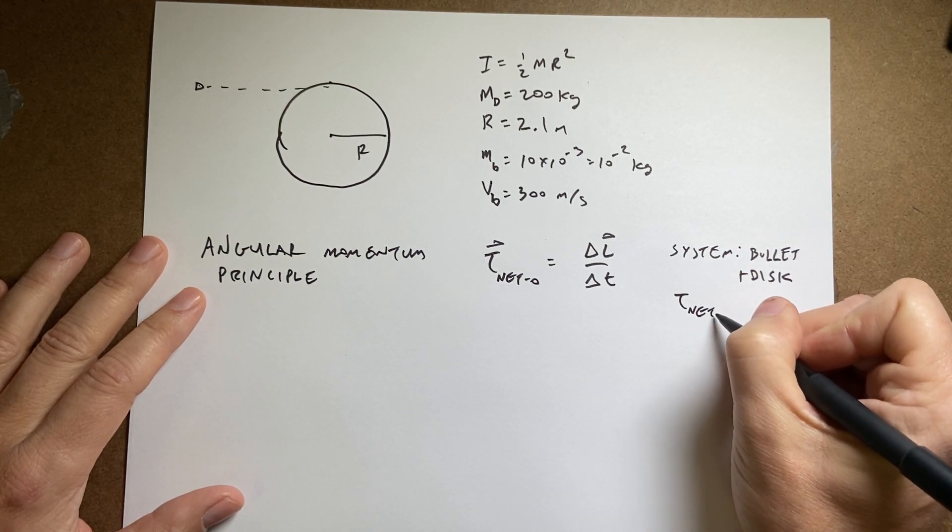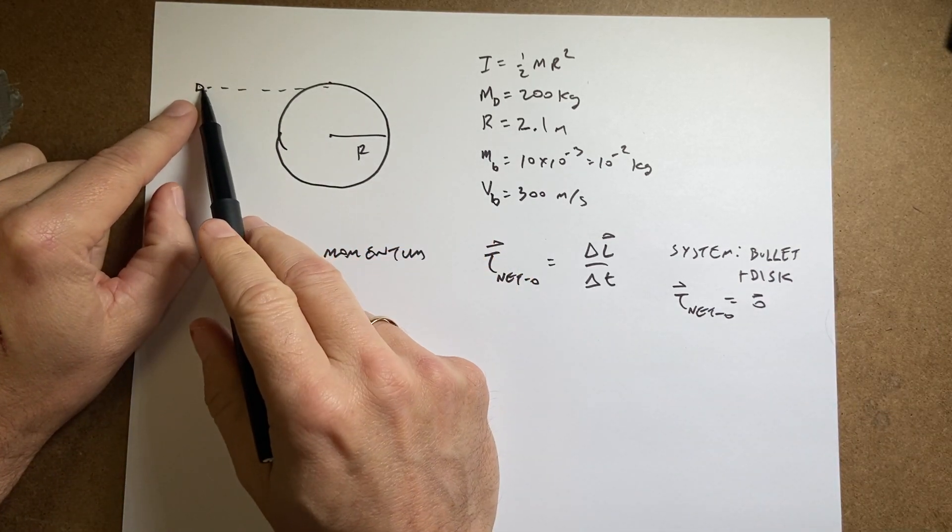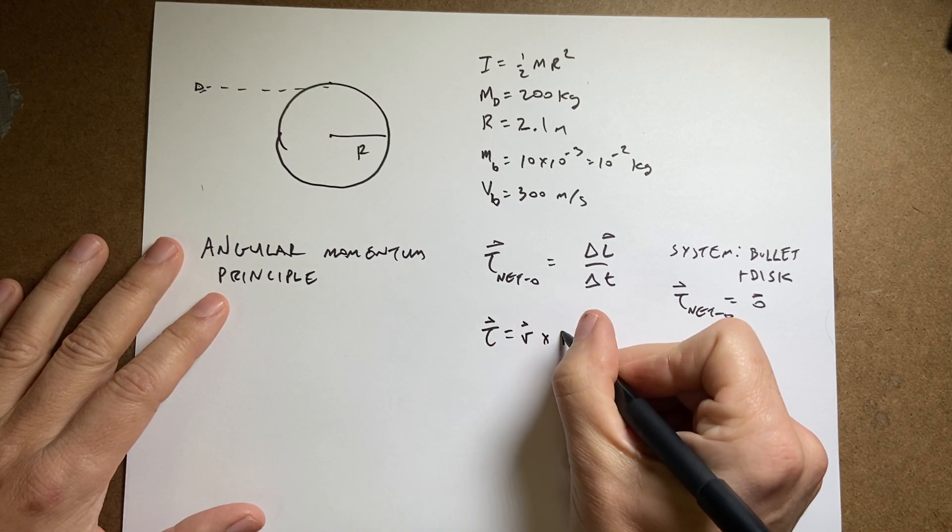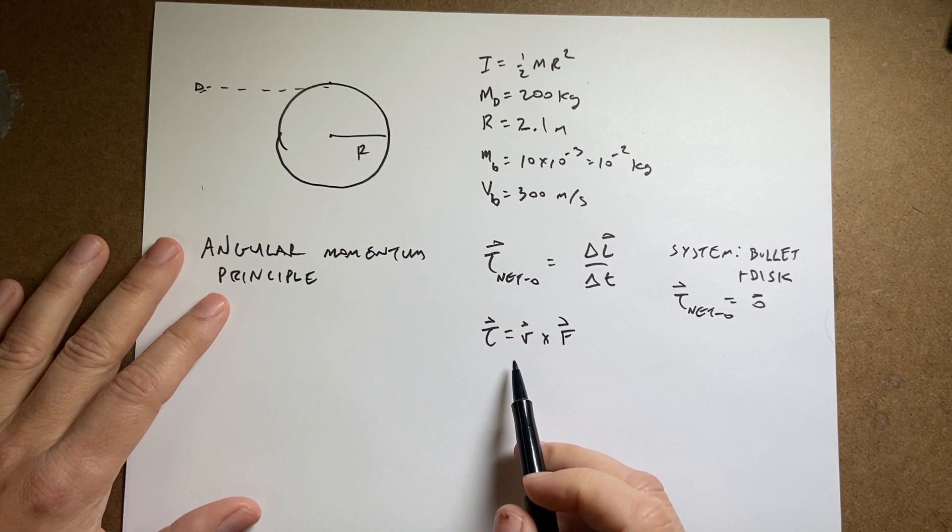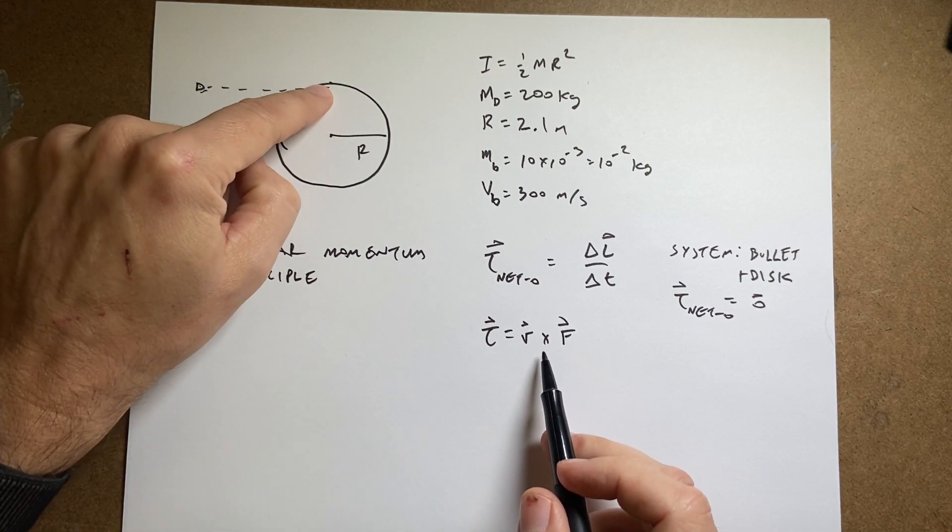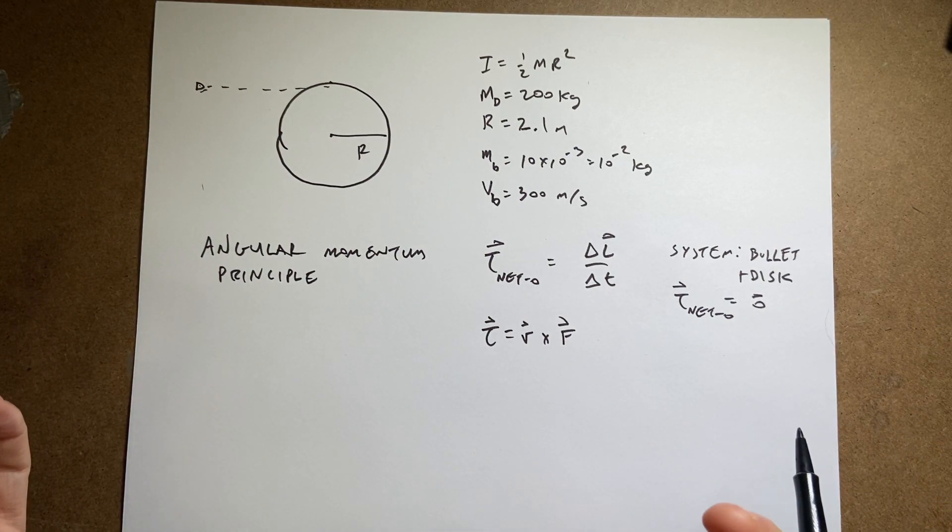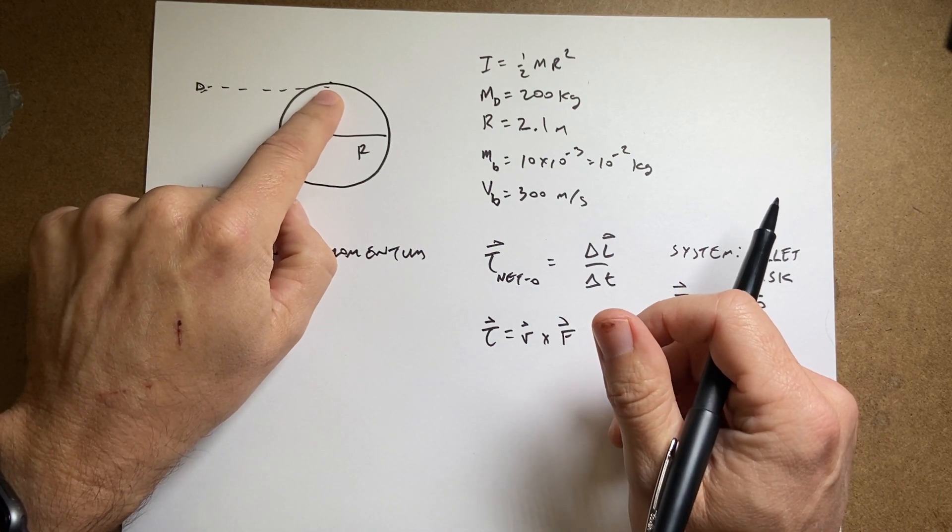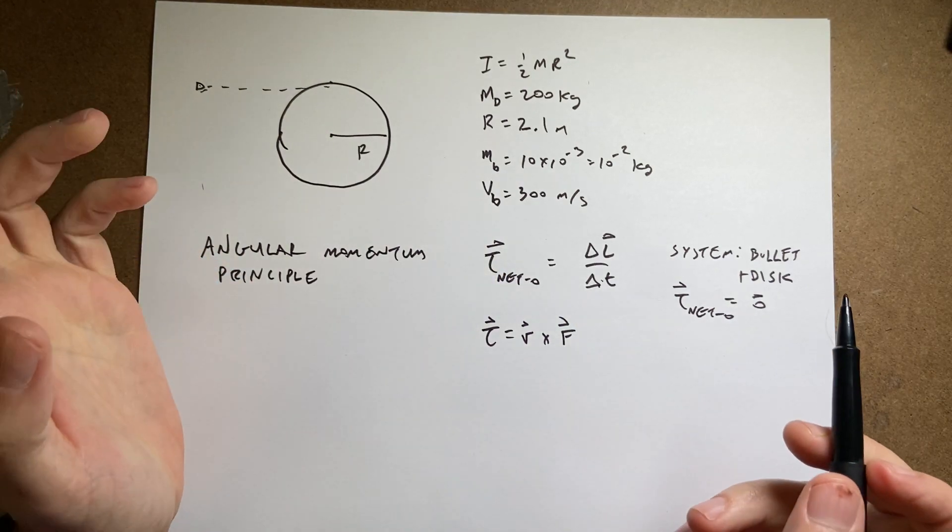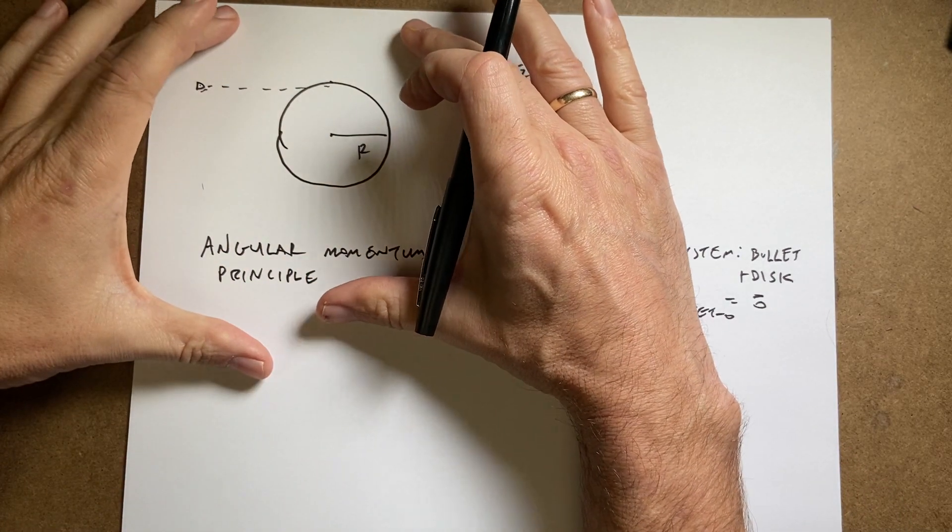The angular momentum principle says the net torque about some point on an object equals the change in angular momentum with respect to time. L is angular momentum and T is torque. Now torque net about O equals zero, right? When we define torque as R cross F, the torque depends on the force that the bullet hits the disc, which I have no idea what that would be. I can't calculate the torque or the time. I need both of these. I don't have either of those.